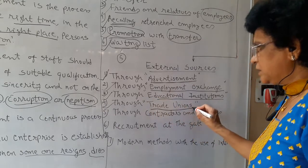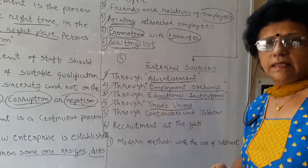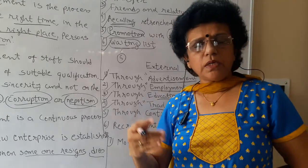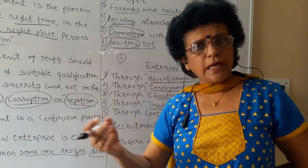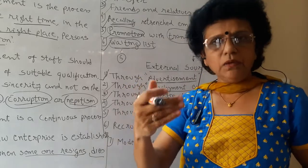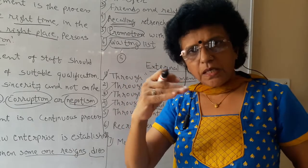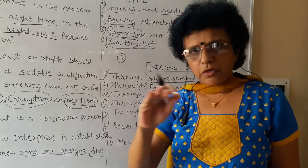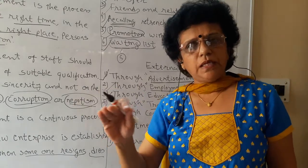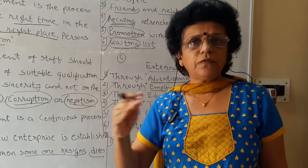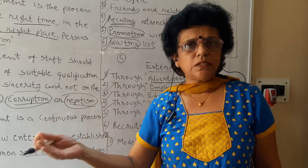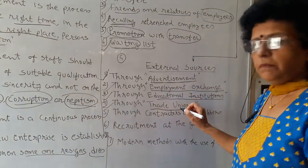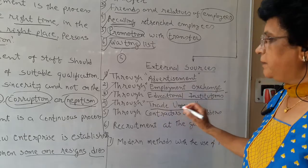The next source is through the trade union. Trade union associations maintain a list of available workers. When you are looking for labour — particularly lower-level, bottom-level, functional-level, working employees — you can approach them. Trade union becomes a very good source of recruitment for these categories of employees.